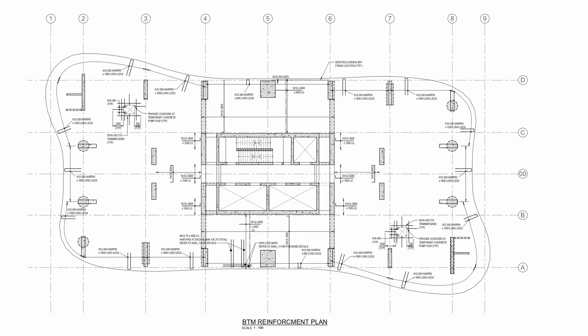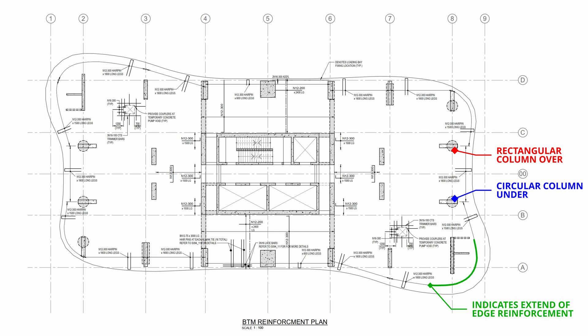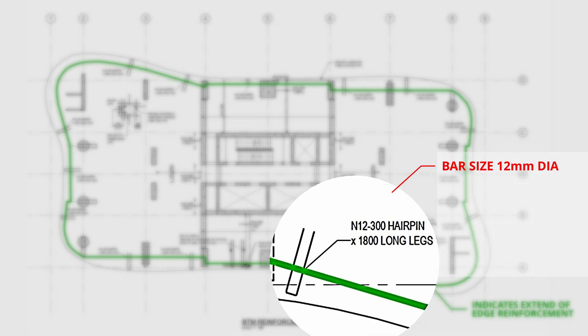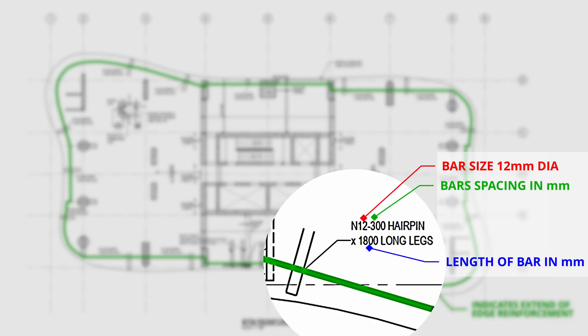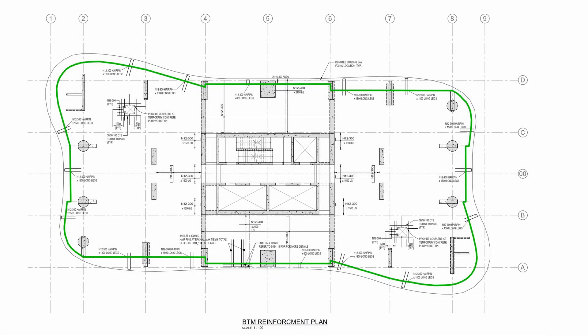Drawing sets are normally laid out in the order they'll be constructed. After the general arrangement plan showing depth of folds or voids, you generally move on to the bottom reinforcement plan, as this is what needs to be laid out before anything else. On the bottom reinforcement plan, columns dashed underneath and solid lines for columns over or wall supports are shown. Edge reinforcements are called up with the bar designation, number of bars, length, and centers — or just centers if they're continuous across an area.